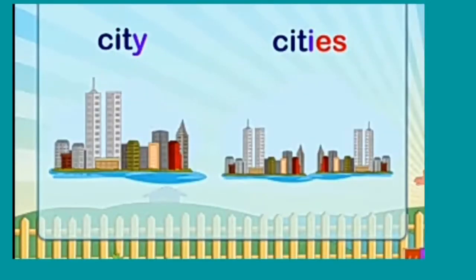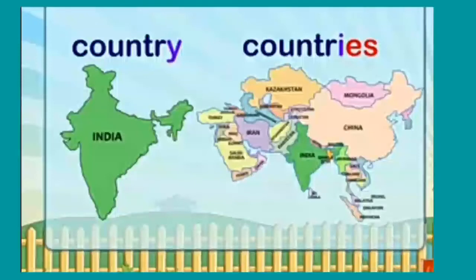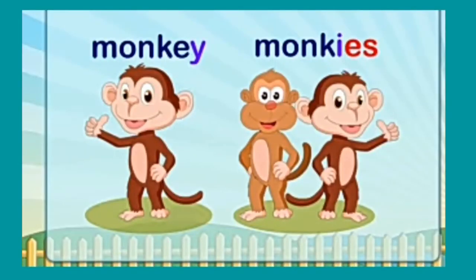City: last mein Y hai, aur Y ke pahle T hai jo consonant hai. Isliye hum Y ko hatakar IES lagayenge — cities. Country → countries: Y ke pahle R hai jo consonant hai, isliye Y hatakar IES → countries.